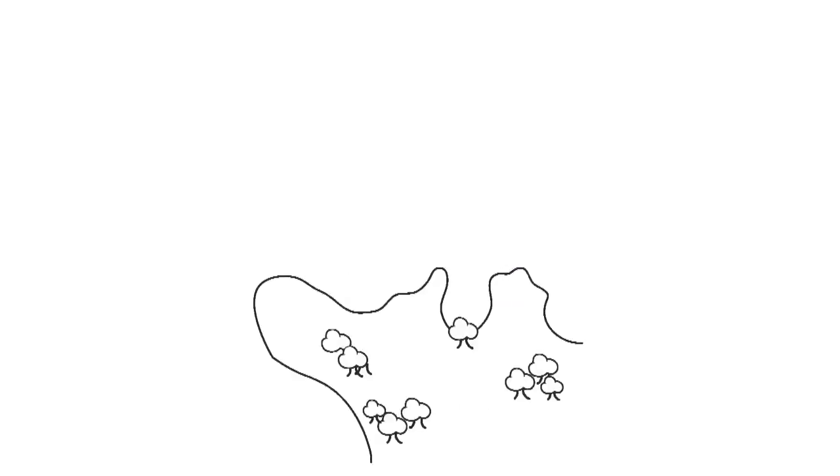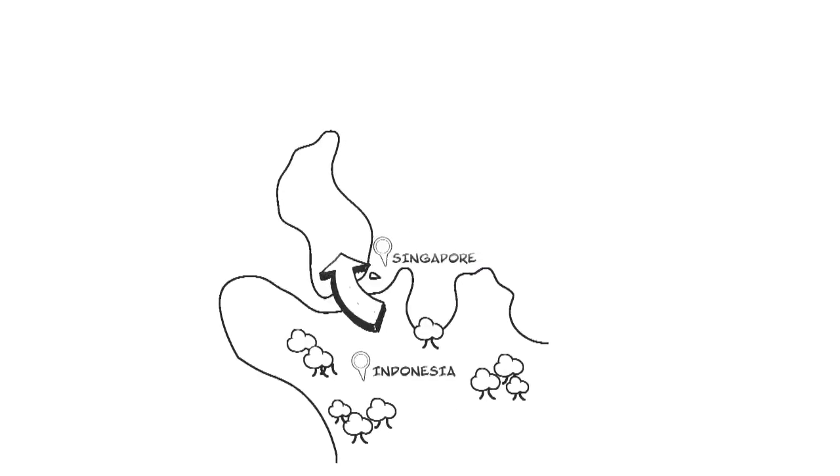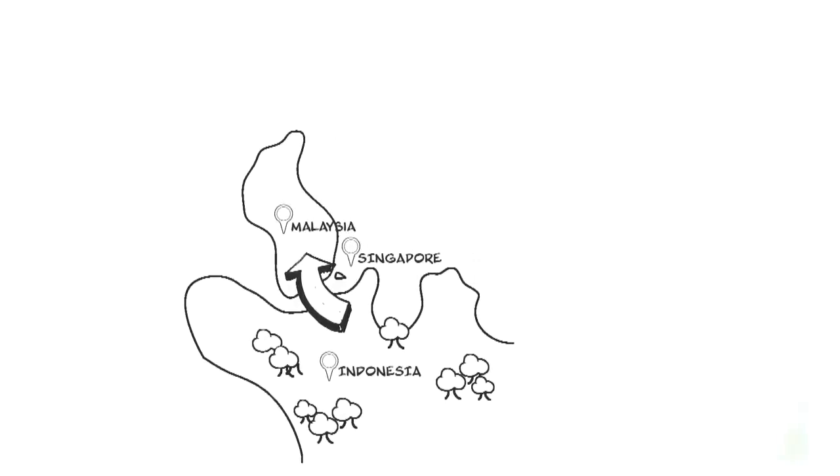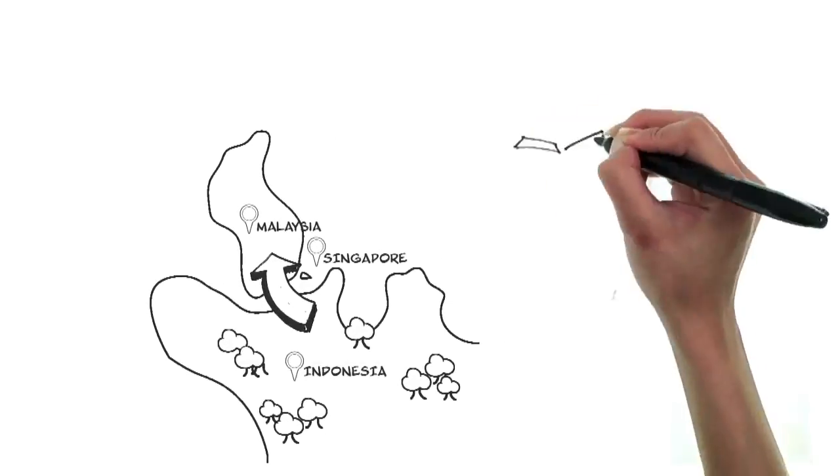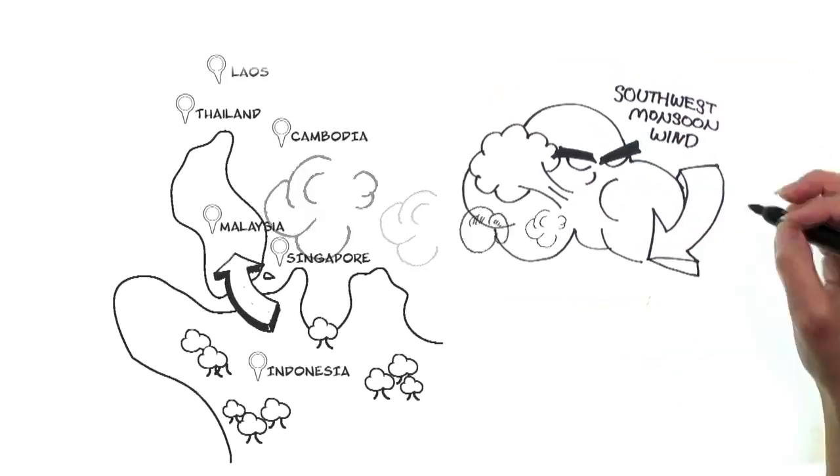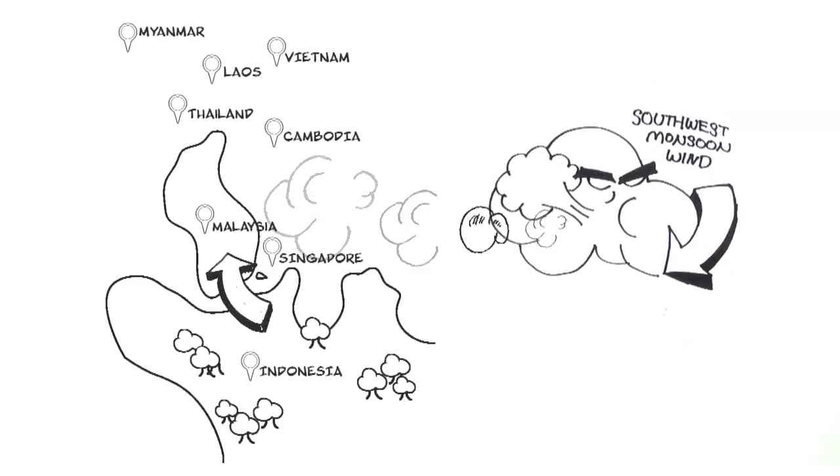But if these fires are started in another country, why does it bother us? This is because smoke from these fires is often carried by southwest monsoon winds into neighboring countries such as Singapore and Malaysia.